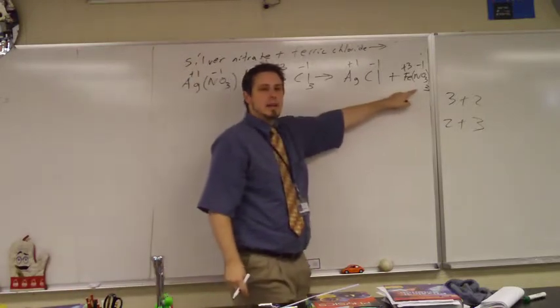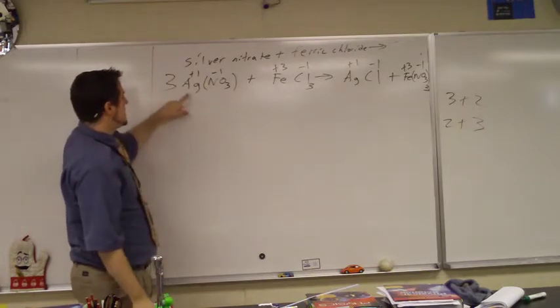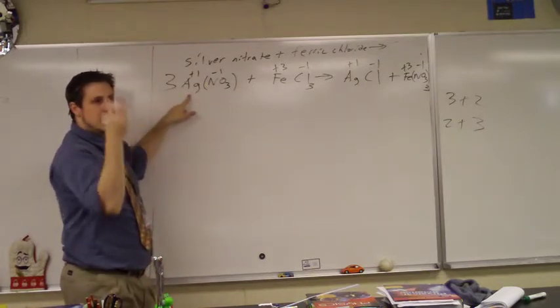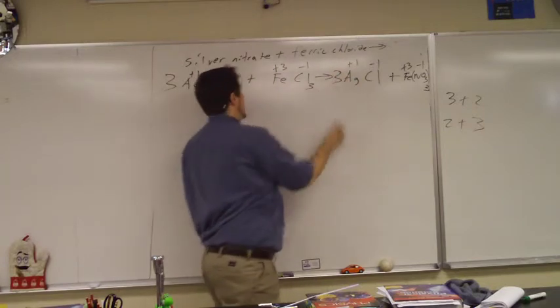How many nitrates do I have on the left? One. How many do I have on the right? Three, so I'm going to put a three out front. Now let's go to the silver. How many on the left? Three. How many on the right? One, so put a three.